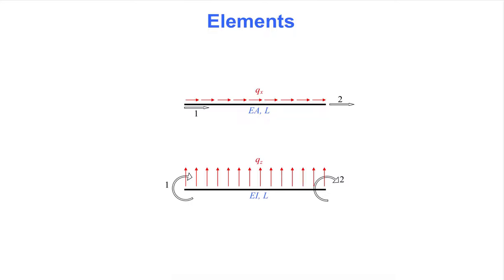The other element is a beam element in its basic configuration, namely with two rotational degrees of freedom. The element length is L and the bending stiffness is Ea.